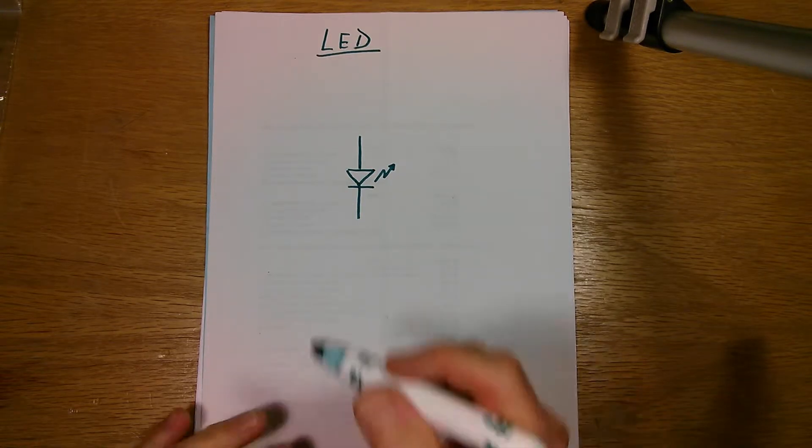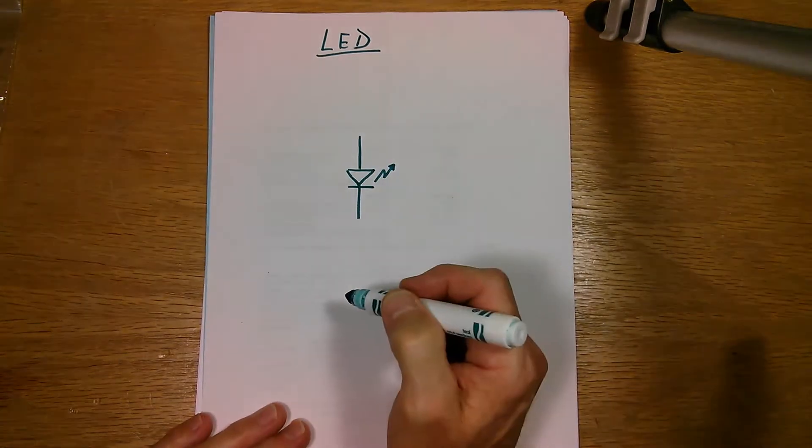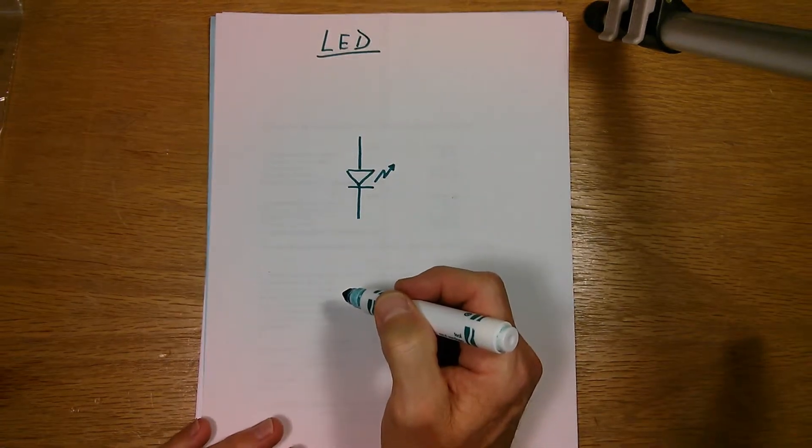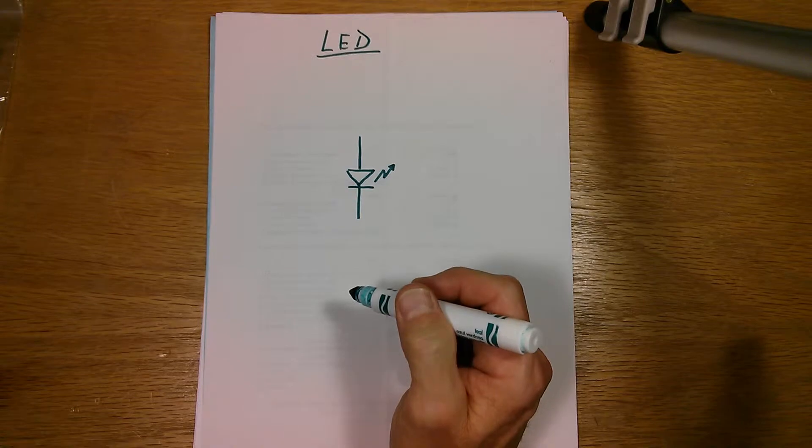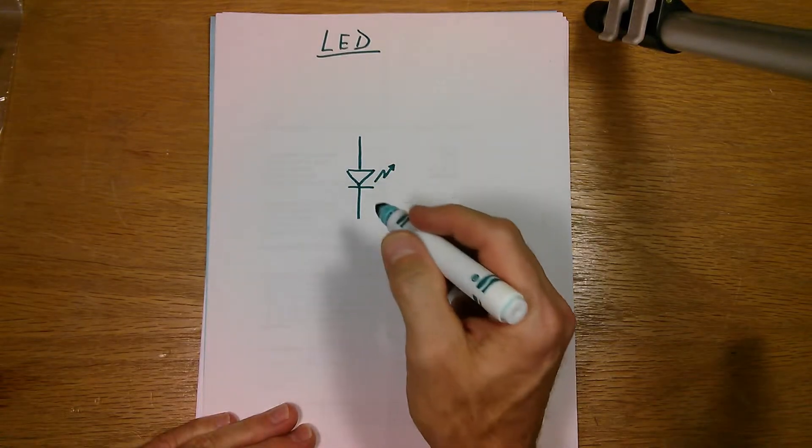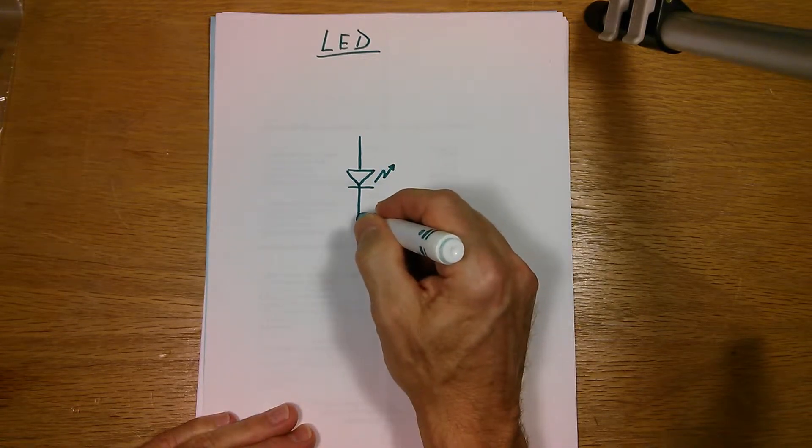You have to put a resistor in series with the diode in order to limit the amount of current flowing through the diode. So I will show you how to interface the diode with a resistor.